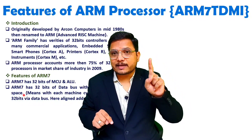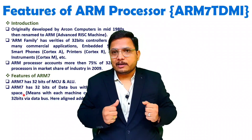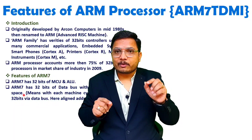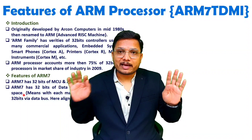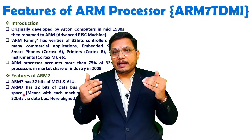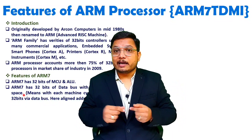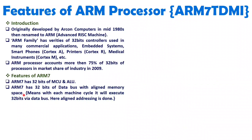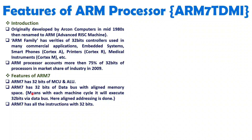With aligned addresses, in a single machine cycle you can take 32 bits of data from memory using 4-level memory banking. ARM7 has all instructions with a size of 32 bits. Because all instructions are 32 bits in size, we can have aligned memory space. If instructions had different sizes, it would not be possible to maintain aligned memory space.